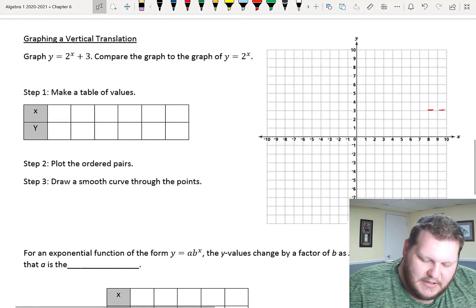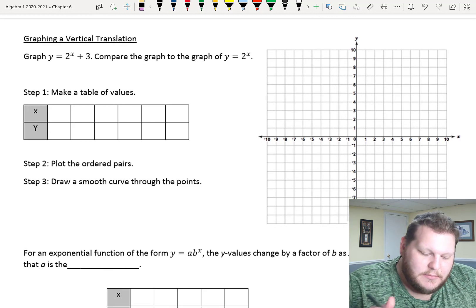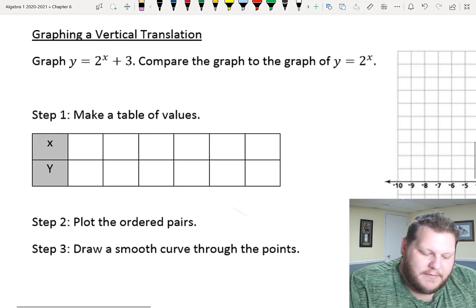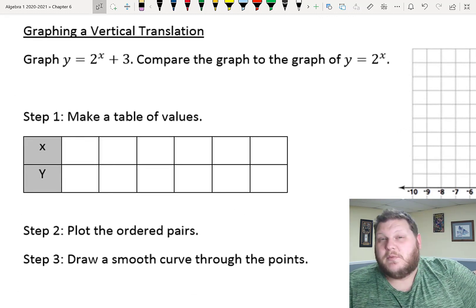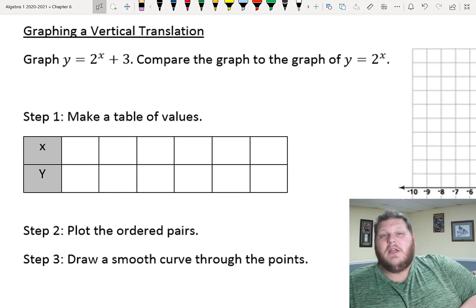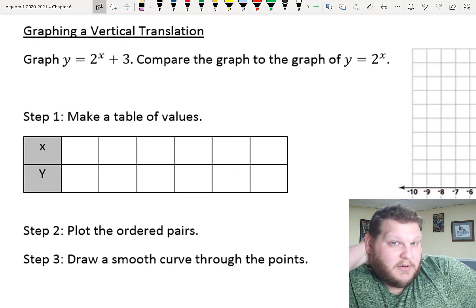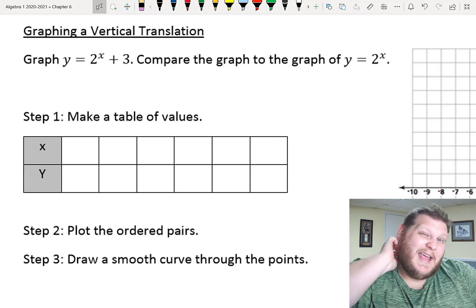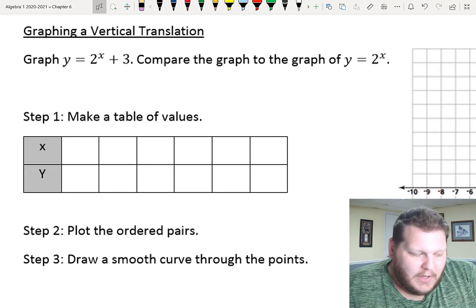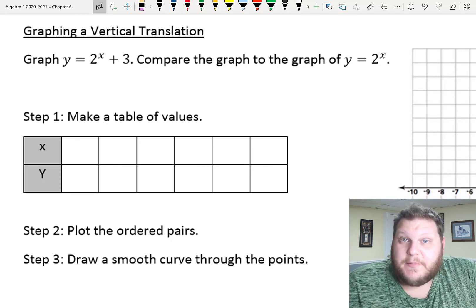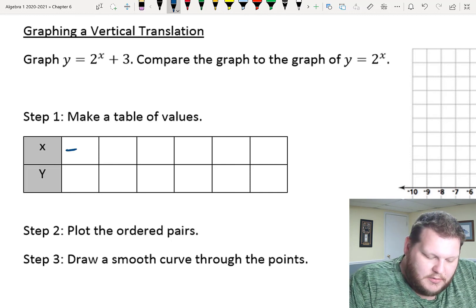All right. Flip it on over to the back side of your notes, graphing with some translations here. If I had my graph for my equation with y equals 2 to the x power plus 3. So, I'm trying to graph basically the same equation, but adding 3 into my equation afterwards. I can use the information that I know.